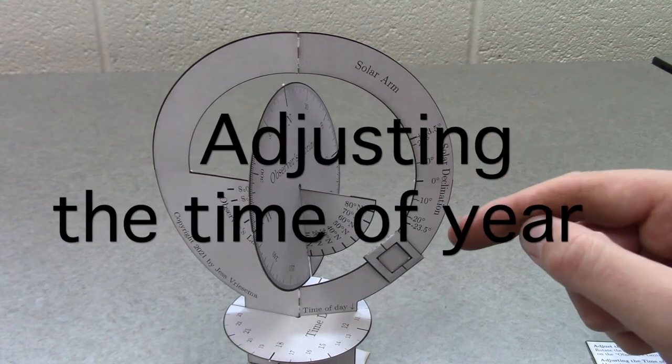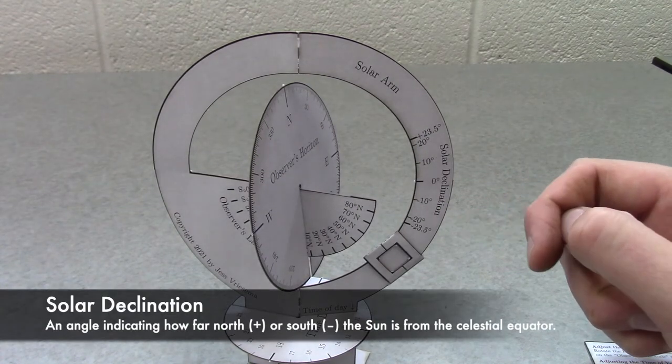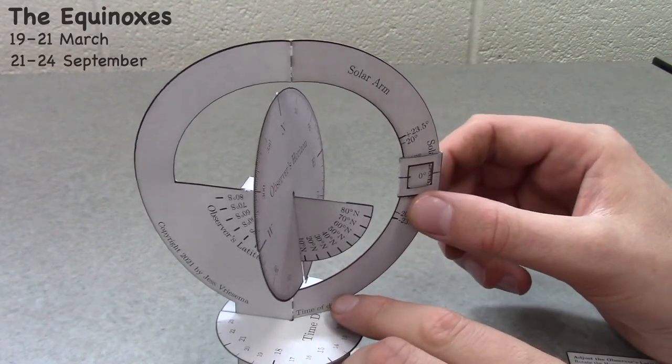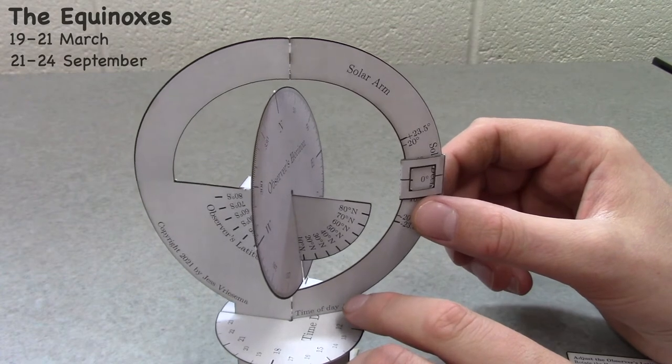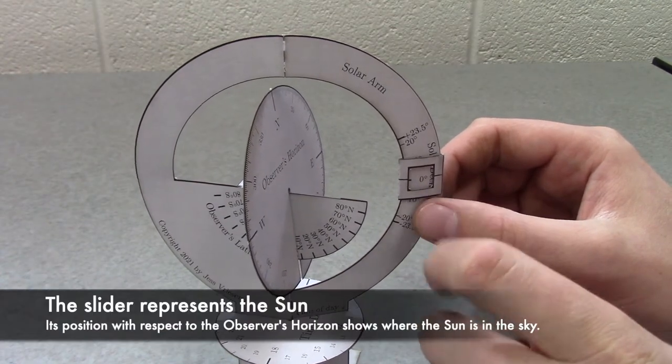The solar declination is related to the time of the year, where earth is in its orbit. On approximately March 21 and approximately on September 21, the equinoxes, the sun has a solar declination of approximately zero degrees.